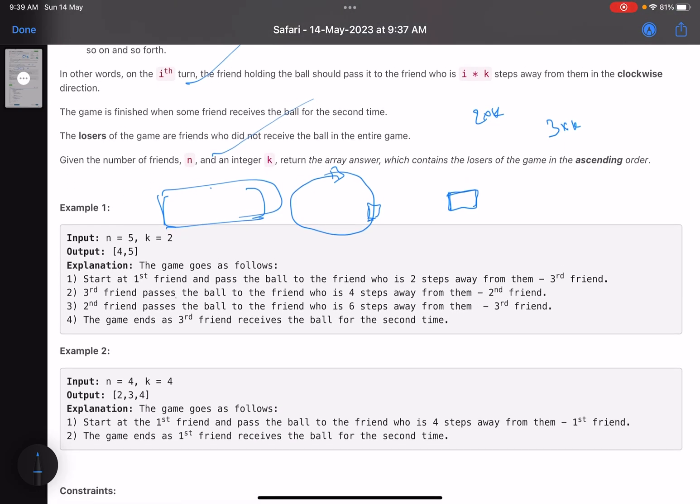For example in this case, you have a circle. You start with player one: this is one, this is two, three, four, five. You start with one. This guy has received the ball. This will pass the ball since this is round number one to k times one steps away, so one, two. The ball will go to friend number three. He has also received the ball. Now since this is round number two, it will pass to two times k, that means four steps away.